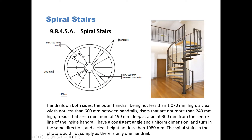You can see in our photograph a typical spiral stair, but in our diagram you can see the minimum 190mm tread, you have the handrails on both sides — inside and outside. You are required to have a 300mm centerline distance, and the tread width at that point has to be a minimum of 190mm. The minimum width between the handrails cannot be less than 660mm.